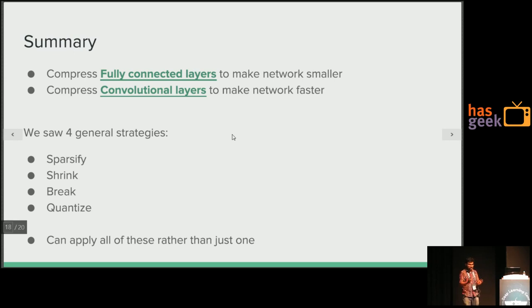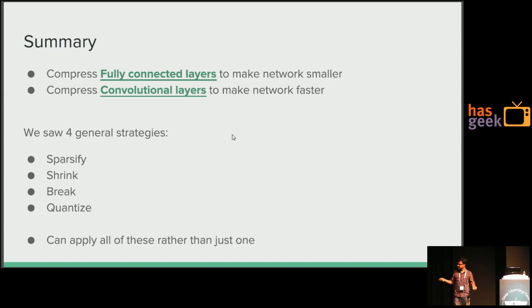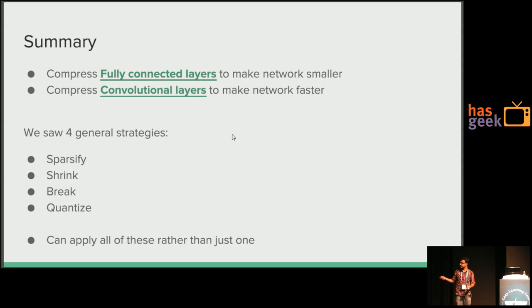To summarize: compressing fully connected layers makes networks smaller; compressing convolutional layers makes networks faster. The four general strategies are: sparsification, shrinking, breaking the matrix into two parts via factorization, and quantization. You can also apply them all together — sparsification plus shrinking plus breaking — for more and more compression.